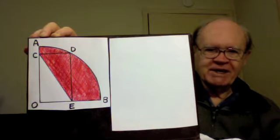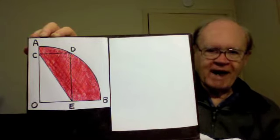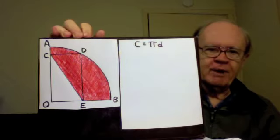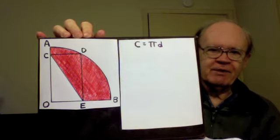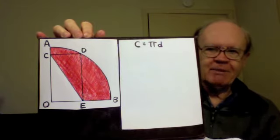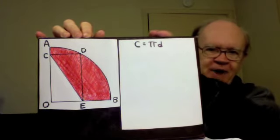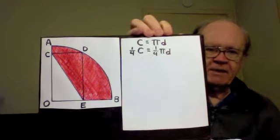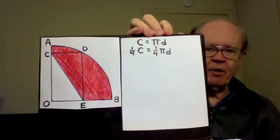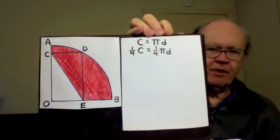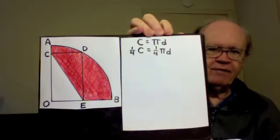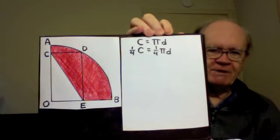Because CDEO is a rectangle, angle O is a right angle, and that means arc AB is one fourth of a circle. The formula for the complete circumference, the complete distance around a circle is circumference equals pi times the diameter, C equals πD. So in this situation we're looking for one fourth of the circumference, one fourth of the circumference equals one fourth times pi times the diameter.